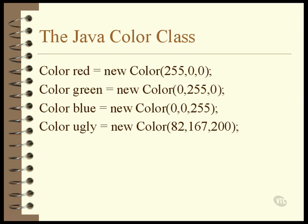You can mix the three primary colors to make any color you'd like. Each of the three primary color values can be set between 0 and 255. In this example, red is set to 82, green to 167, and blue is 200. The three colors are mixed together at these relative intensities to produce a custom color.